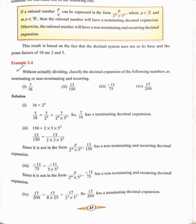For example, without actually dividing, if they ask you to classify the decimal expansion of numbers as terminating or non-terminating recurring, let us see with an example. 7 divided by 16. Here the denominator is 16, so what we have to do is factorize 16. You will get 16 as 2 into 2 into 2 into 2, that is 2 raised to 4. The formula says that if the denominator is in the form of 2 raised to m into 5 raised to n, then the expansion is a terminating decimal expansion. So we get 2 raised to 4 in the denominator.